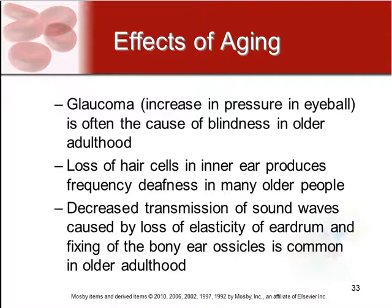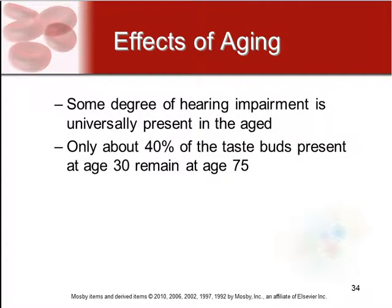Sort of like arthritis in your ear, which limits how much they can vibrate and decreases your ability to hear. To some degree, hearing impairment is universally present for those reasons. And as we age, only about 40% of our taste buds will remain by the time we hit age 75.